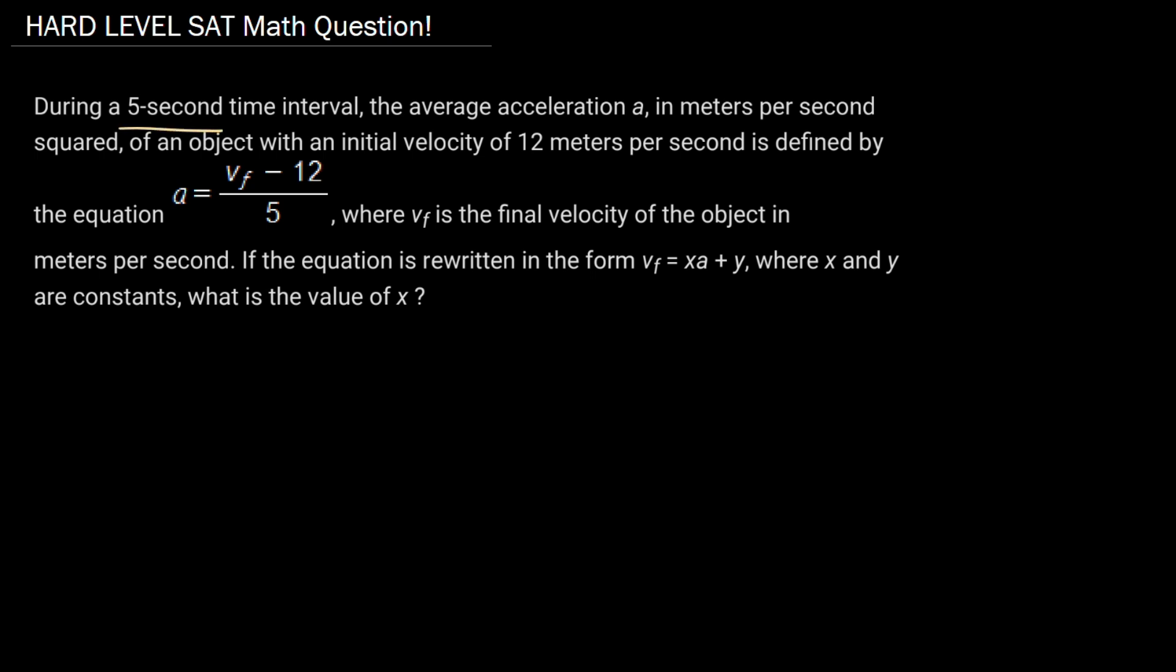During a 5-second time interval, the average acceleration a in meters per second squared of an object with an initial velocity of 12 meters per second is defined by the equation a equals vf minus 12 over 5, where vf is the final velocity of the object in meters per second.